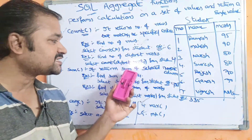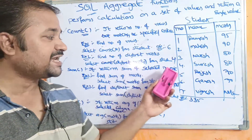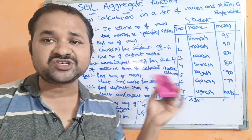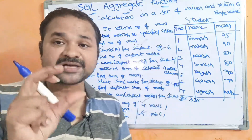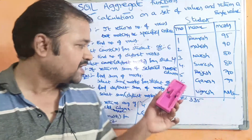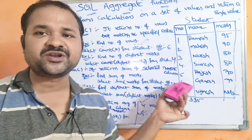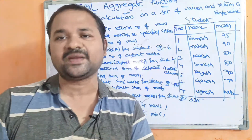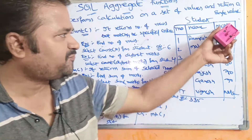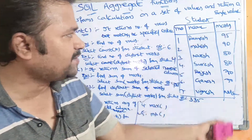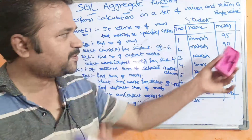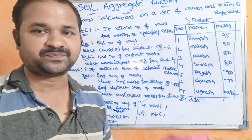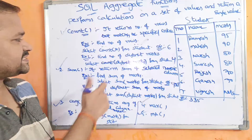Now let us see the sum function. It returns the sum of selected numeric columns. The sum function will be applied on numbers only, and it is applied on a column. Let us perform sum on the marks column.